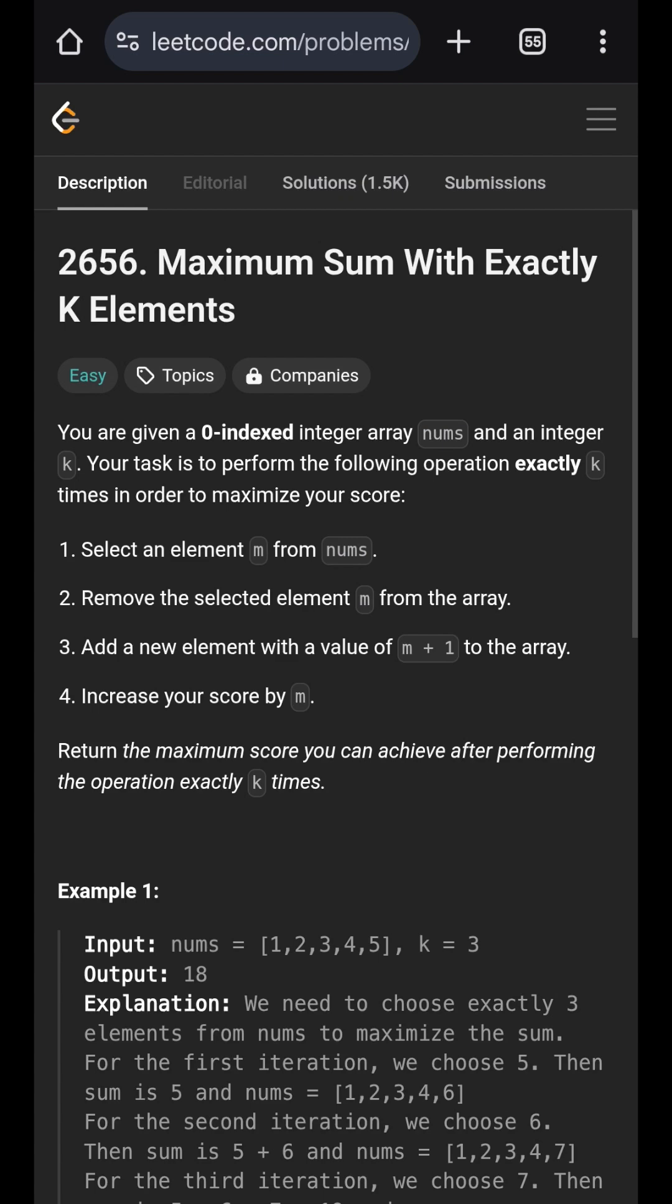Maximum sum with exactly k elements. Given a list of numbers and an integer k, choose a number in one operation and add it to total, then replace the number by itself plus 1.